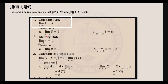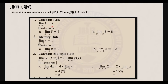First, we have the constant rule. The constant rule states that the limit of k, wherein k is a real number, as x approaches c is equal to k. For example, find the limit of 5 as x approaches 2 — that's equal to 5. Second example: find the limit of 8 as x approaches negative 3 — that's equal to 8.